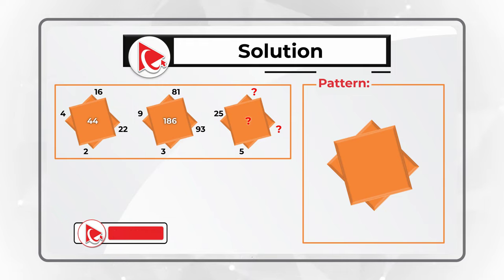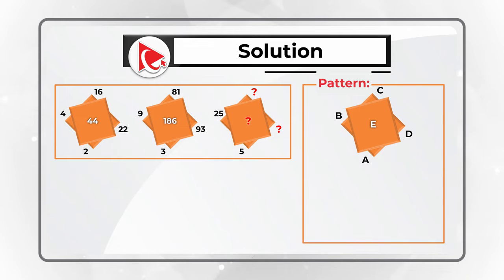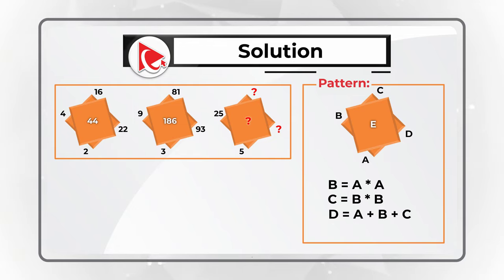If we number the corners of the diamonds and the middle with letters A, B, C, D, and E, we can build a pattern: B is calculated as A multiplied by A (A squared); C is calculated as B multiplied by B; D is calculated as A plus B plus C; and E is calculated as C multiplied by 2.